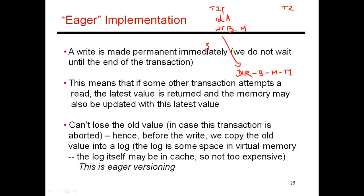Now let's say that transaction T2 comes along and wants to do a read of B. It says it doesn't have a cache copy, so it needs to contact the directory. The directory says T2 needs to get its latest copy of the block from transaction T1, so this message is forwarded to T1. For this block, just as before, there are read and write bits, and the write bit is set, saying I'm in the middle of this transaction and I have modified block B.